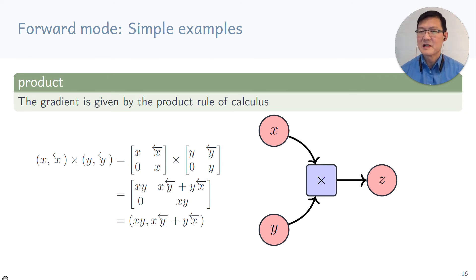Let's consider the product of two dual numbers as represented by the matrices. We just multiply as usual using matrix multiplication, getting the middle matrix there. We see that the gradient of x times y is the variable x times the gradient of y plus the variable y times the gradient of x. This recovers the product rule of calculus as you would expect.